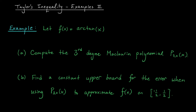Hi everyone and welcome back. For our second example video on Taylor's inequality, we're going to consider the function f of x equals arctan x. We'll start by approximating this function using its third degree Maclaurin polynomial p3. We'll then use Taylor's inequality to determine the magnitude of the error — specifically, a constant upper bound for our error term when we approximate f of x using p3 for inputs between minus one half and one half.